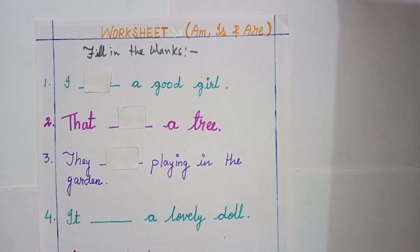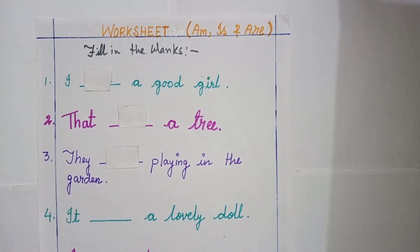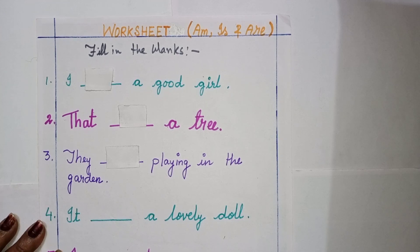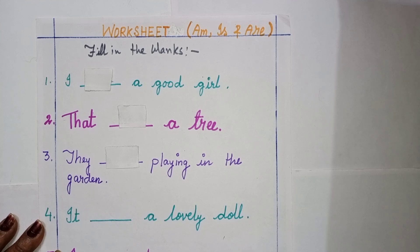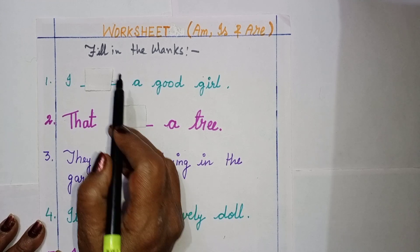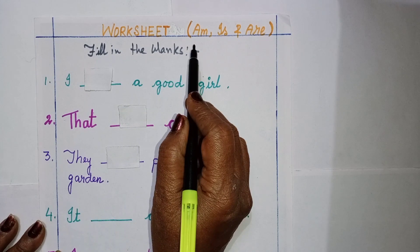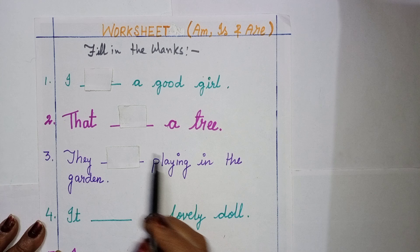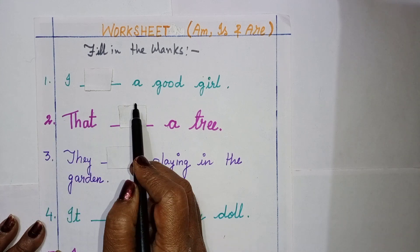Hello children, how are you all? Hope you are doing well. So let's begin with the English language class. What we are doing now, children, we are doing am, is, and are. So today we will do a worksheet practice. Come, let's start. Fill in the blanks with am, is, and are.